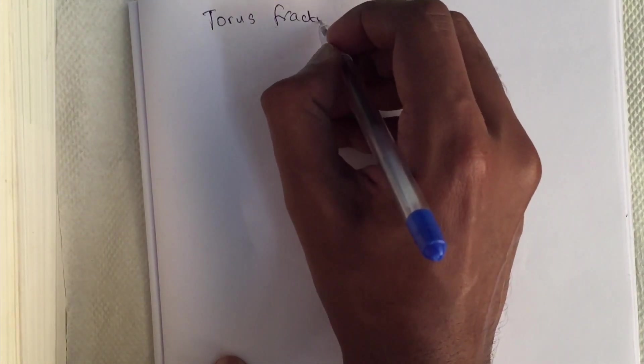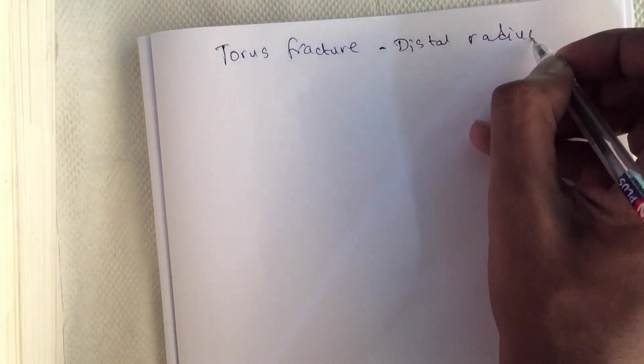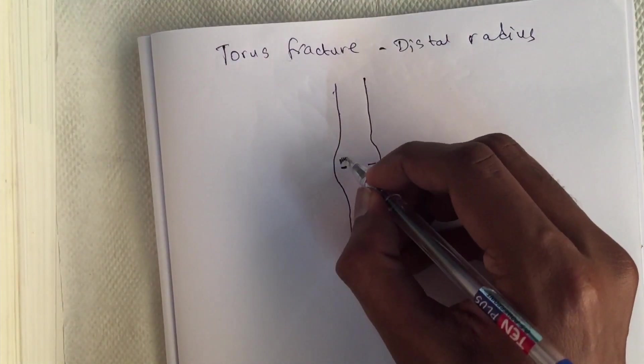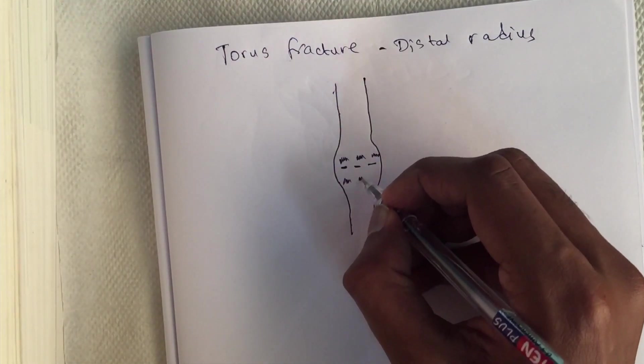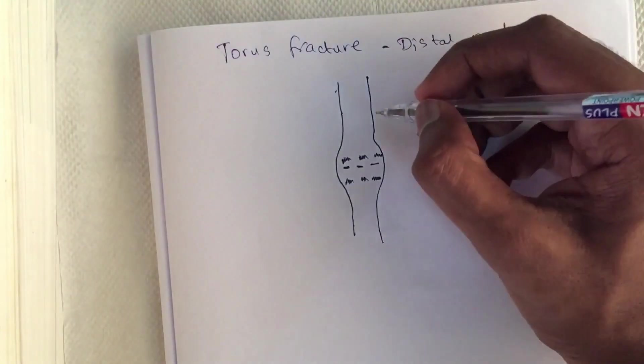The second type of incomplete fracture is torus fracture. This type of fracture also occurs in children, where one or both cortices get buckled due to vertical compression, but it does not get displaced. This commonly occurs in the distal radius.